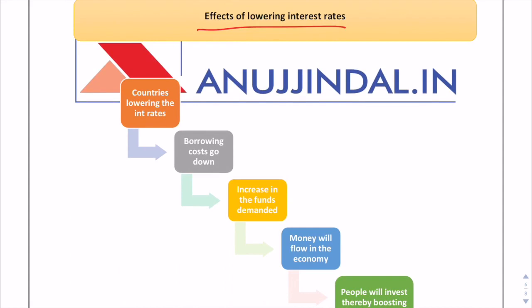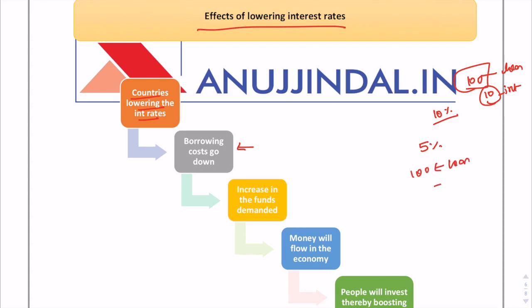What are the effects of lowering interest rates? To boost investment and growth, the mechanism works as follows: as countries lower interest rates, the borrowing cost goes down. For example, if the interest rate was 10% and a person takes a loan of 100 rupees, they pay 10 rupees as interest. But when interest rates fall to 5%, only 5 rupees has to be paid, which incentivizes investors and companies to take up loans.